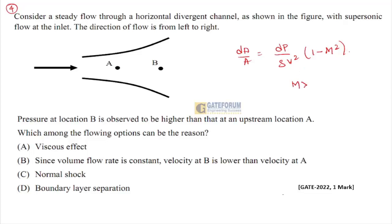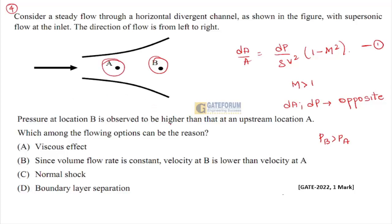By the momentum principle: dA/A = dp/(ρv²) × (1 - M²). For supersonic flow M > 1, so dA and dp must be in opposite directions. Since pressure at B is greater than A, an adverse pressure gradient forms. The Mach number must drop below 1 at B, meaning a normal shock occurs between A and B. Therefore option C — normal shock — is the right answer.